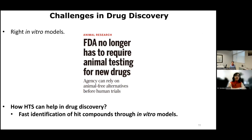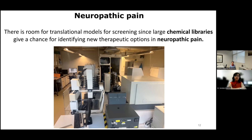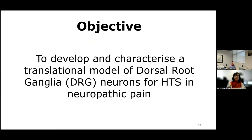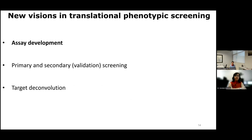High-throughput screening may be helpful in drug discovery of novel drugs for neuropathic pain, allowing the identification of hit compounds through in vitro models. Translational models for screening large chemical libraries give a chance for the identification of novel therapeutic options in neuropathic pain. Thus, our aim is to develop and characterize a translational model of dorsal root ganglia neurons for high-throughput screening in neuropathic pain.